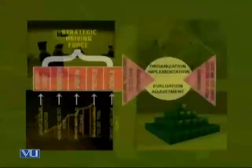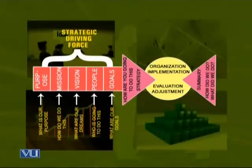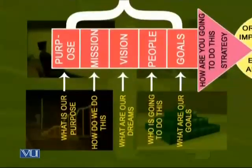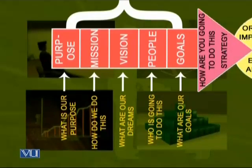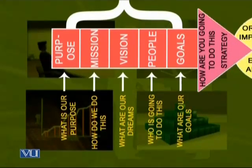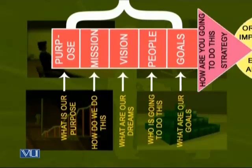Take this organization as a whole system. There are strategic driving forces for any organization — they have a specific purpose, they define their mission, and keeping in view their mission, they have certain visions. They decide goals and place different people in different positions to achieve those goals. Now, how are you going to do this with the people? One can say that if you have only the people, how can you get things done — unless you have the technology, the financial resources, the market, and so many other stakeholders or inputs.